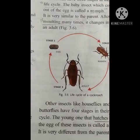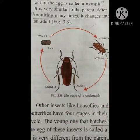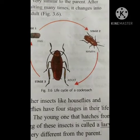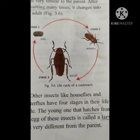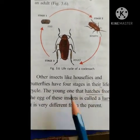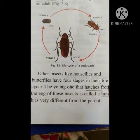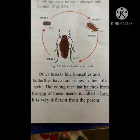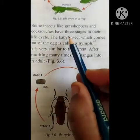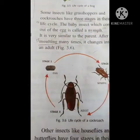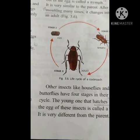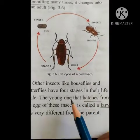Next one is the life cycle of the cockroach — the grasshopper life cycle is the same. We will see next how the life cycle of the butterfly and the mosquito goes on. Other insects like house flies and butterflies have 4 stages in their life cycle. In cockroaches and grasshoppers there are 3 stages, but in insects like house flies and butterflies — both are insects — there are 4 stages.